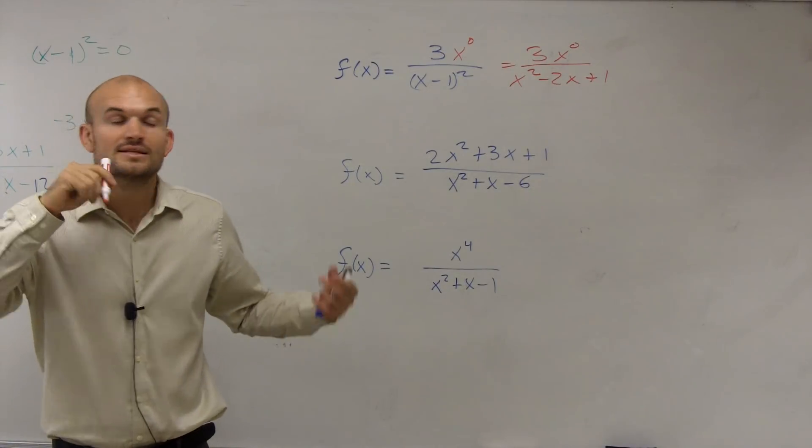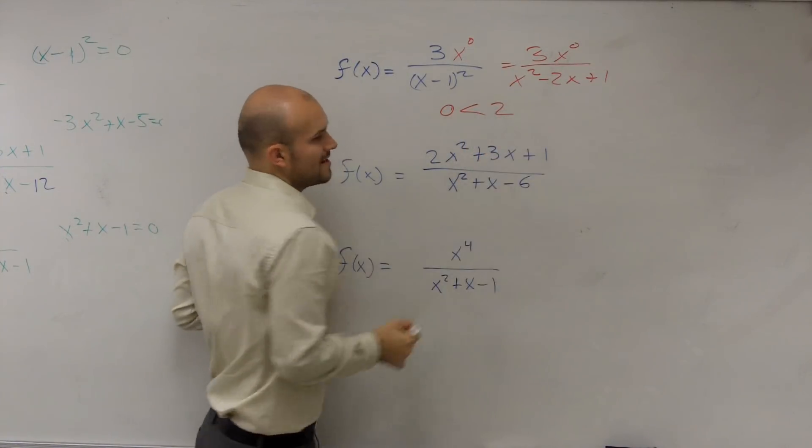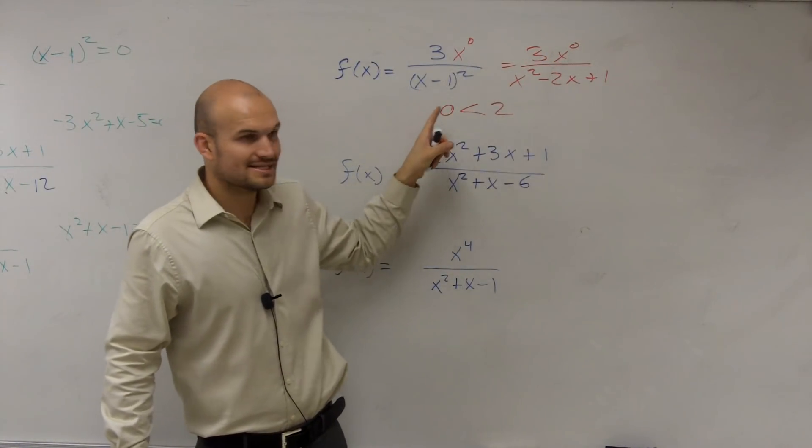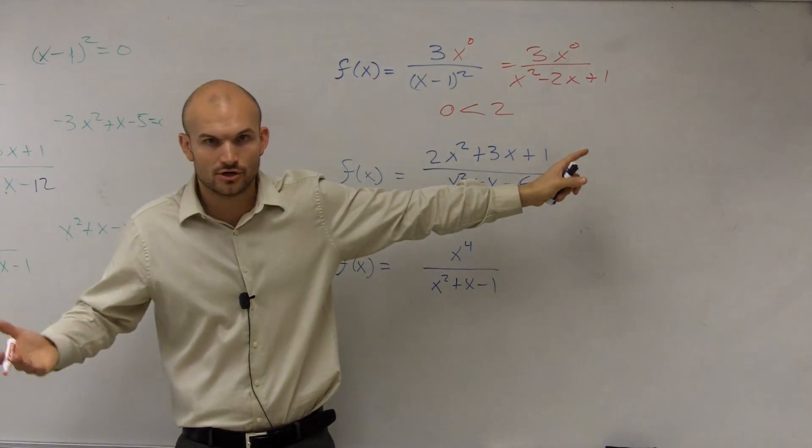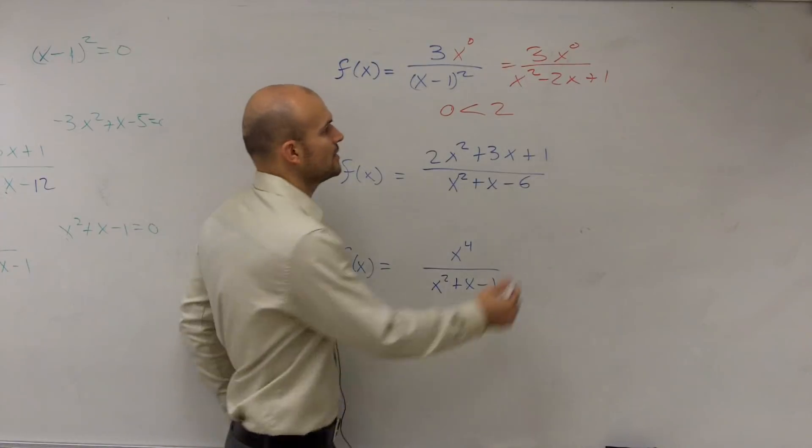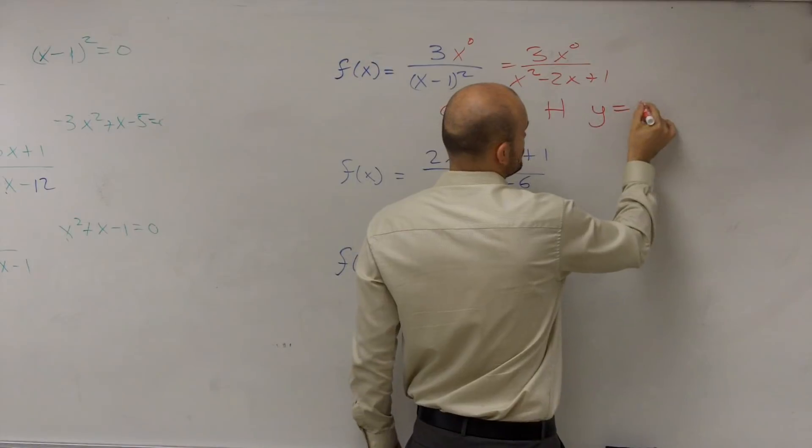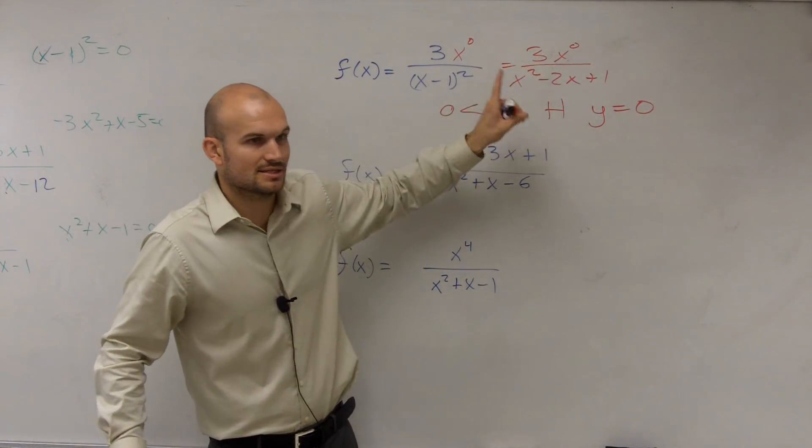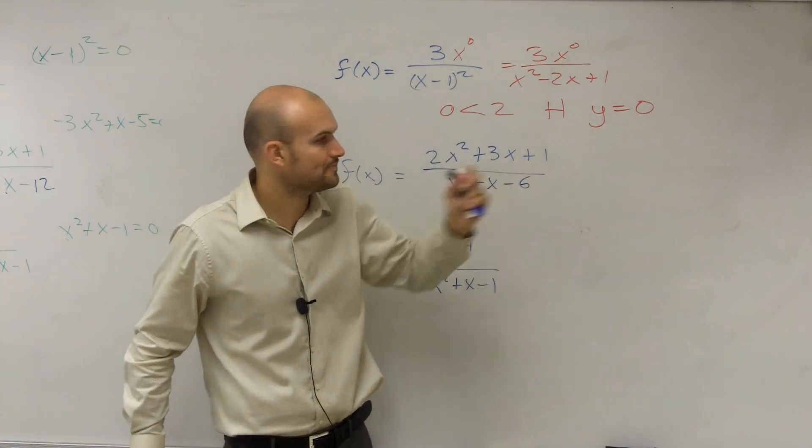Denominator. So whenever you have the degree in your denominator is less than the degree in your numerator, which we said n is less than m, that was in your notes, we'll go over it again. Whenever your degree in the numerator is less than the degree in your denominator, your horizontal asymptote is y equals 0. Always. Whenever the degree in the numerator is less than the degree in the denominator, your horizontal asymptote is y equals 0.